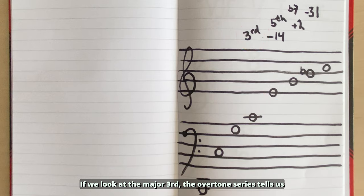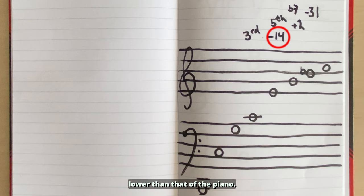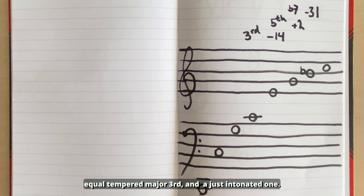If we look at the major third, the overtone series tells us that this interval should be 14 cents lower than that of the piano. Let's listen to the difference between an equal tempered major third and a just intonated one.